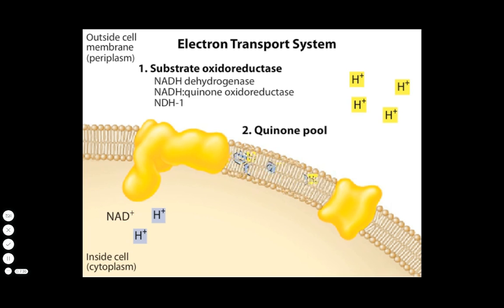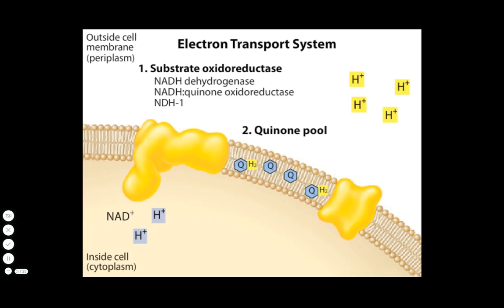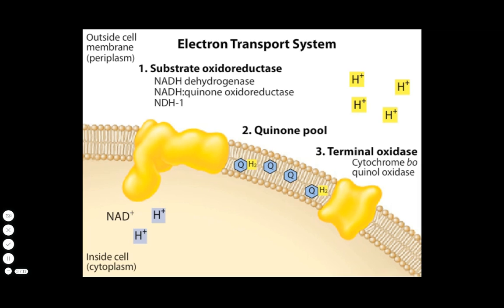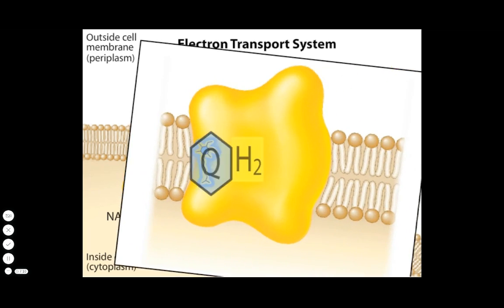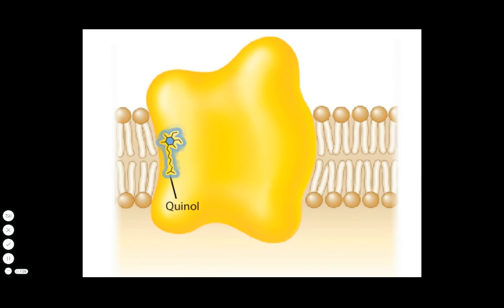This quinone pool represents the second of three functional components of the electron transport system. The third component is a terminal oxidase complex — in this example called more specifically cytochrome bioquinol oxidase. Within the complex is the binding site for quinol, as well as two iron-centered heme groups and three copper atoms.